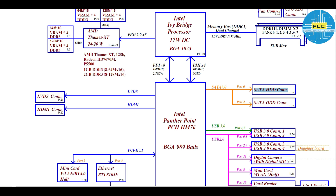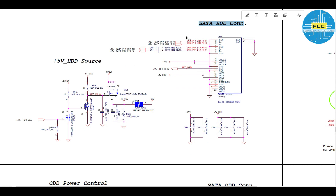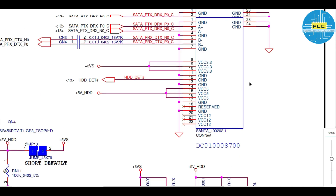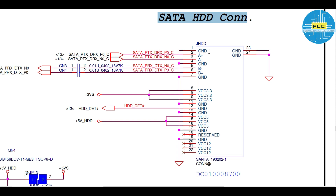Now going directly to page number 41, here is the SATA HDD connection. SATA contains a maximum of 24 pins, and out of these 24 pins, the maximum number are ground pins, so we need not worry about those.